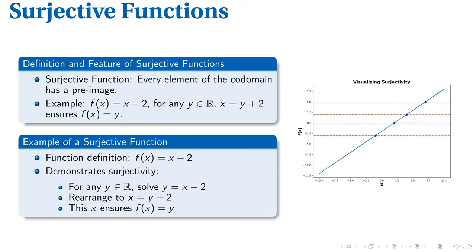Being able to solve y equals x minus 2 for any y in the codomain is what makes this function surjective. By applying this principle, you can identify and verify surjectivity in more complex functions, solidifying your understanding of this foundational mathematical concept.